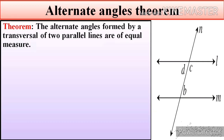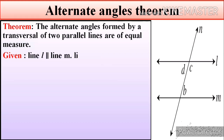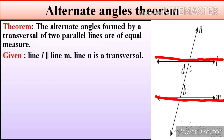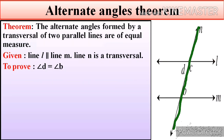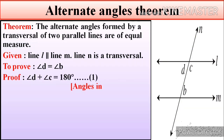In the figure there are three angles: angle D, angle C, and angle B. The given information is that line L is parallel to line M, and line N is their transversal. Here we have to prove that angle D is equal to angle B.